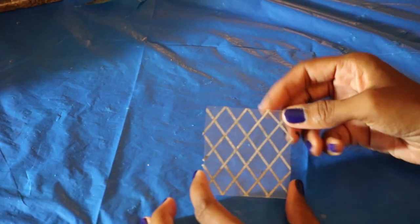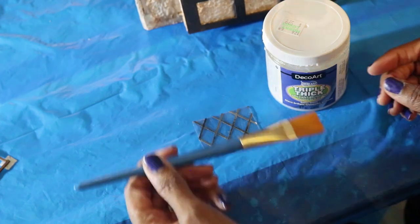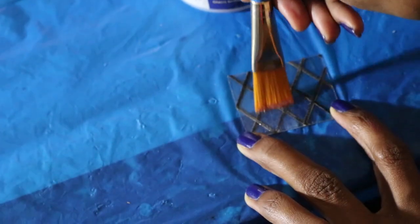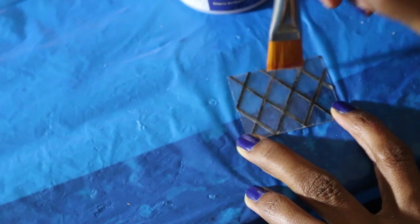Next, I flip the window over and follow the lines on the other side. When both sides are finished, I apply the glaze. I brush on one thick layer and leave it to dry.